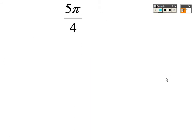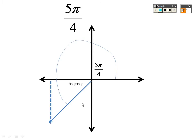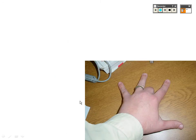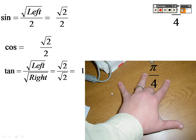5π/4 — the reference angle will be π/4. This is where it would be on the unit circle. 5π/4 minus π is π/4. That is your middle finger, your π/4 finger, or your 45-degree finger. So sine is √2/2, cosine is also √2/2, and tangent is √2 divided by √2, which is 1.